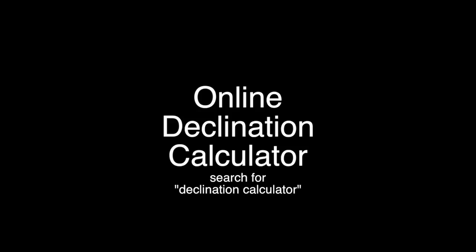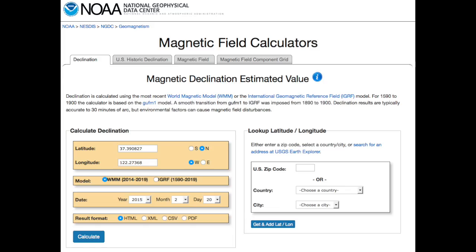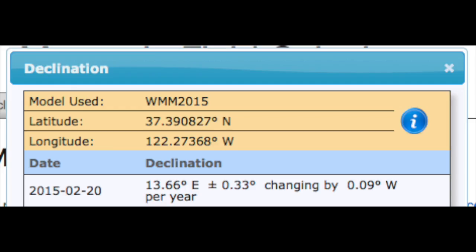If you have internet access, a search engine query on declination calculator should reveal one or more online calculators. Here's one based in the United States run by the National Geophysical Data Center. We entered the latitude and longitude values for our current location along with the current date. The calculator informed us that the current declination here is 13.66 degrees east and that it changes by nine hundredths of a degree to the west each year.